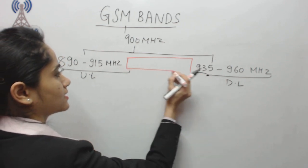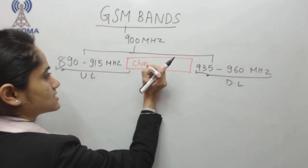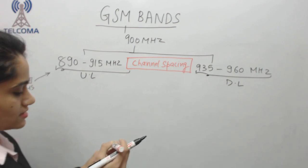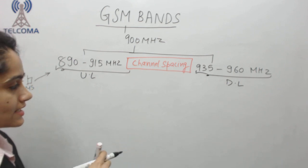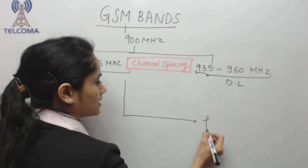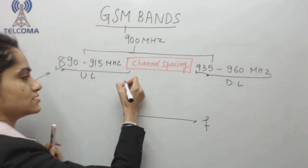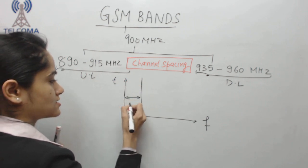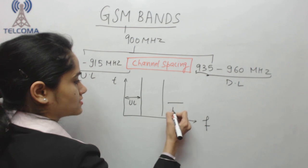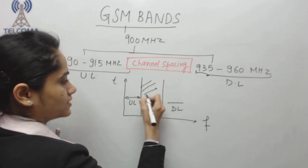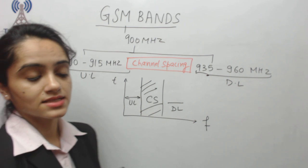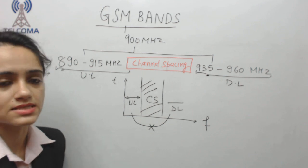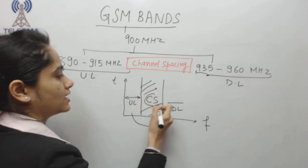The space between the uplink and downlink frequency ranges is called channel spacing. In FDD mode — Frequency Division Duplex — we have the uplink frequencies and the downlink frequencies, with channel spacing in between. Channel spacing is required so that uplink frequencies will not interfere with the downlink frequencies.